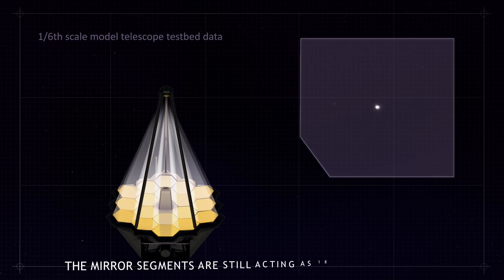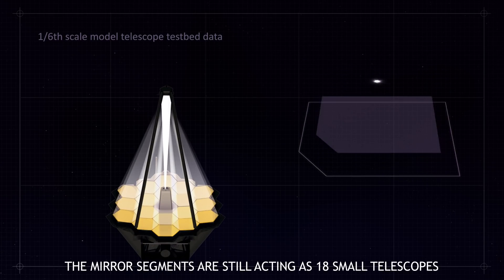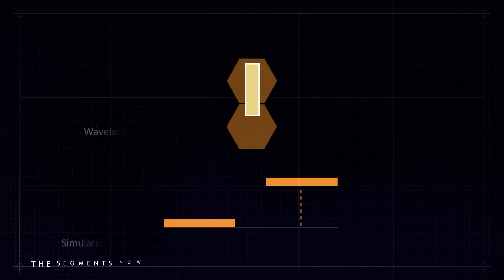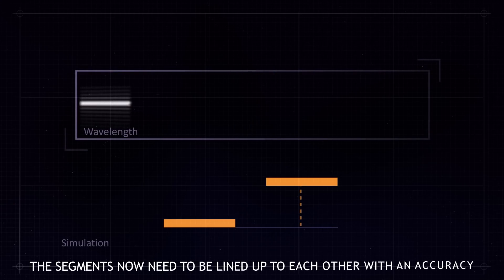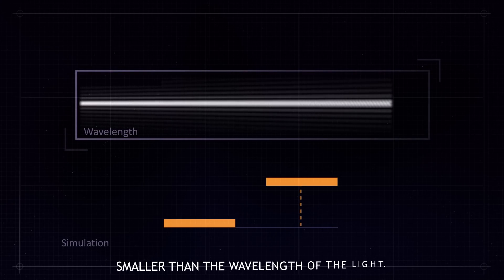the mirror segments are still acting as 18 small telescopes rather than one big one. The segments now need to be lined up to each other with an accuracy smaller than the wavelength of the light.